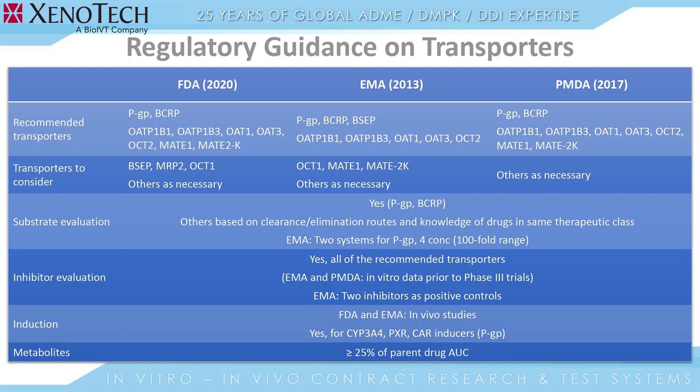The regulatory guidance has very clear recommendations on considerations when evaluating transporters for DDIs. The FDA, EMA, and PMDA generally overlap in the nine main transporters that should be investigated. These include the efflux transporters PGP and BCRP, along with the uptake transporters OATP 1B1, 1B3, OAT1, OAT3, OCT2, MATE1, and MATE2K. The regulatory guidance also recommends that other transporters should be considered as necessary, including BSEP, MRP2, and OCT1.